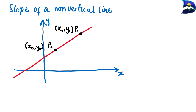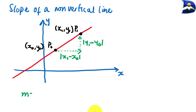To find the slope, we need to determine the direction on the horizontal, which is assigned as x1 minus x0. We also have the vertical change, which is y1 minus y0. The combination gives us the slope formula: slope equals y1 minus y0 divided by x1 minus x0.